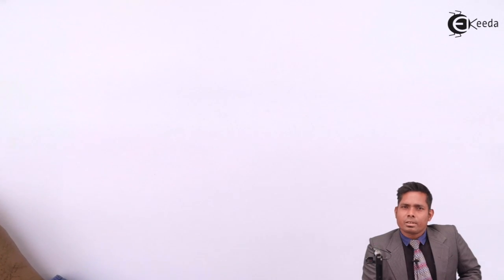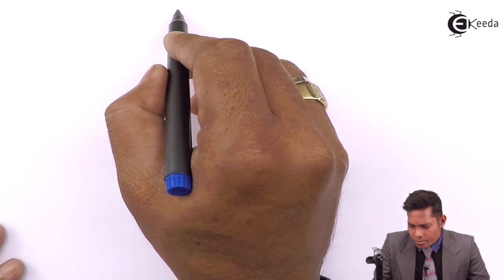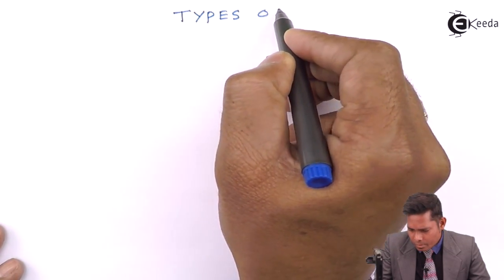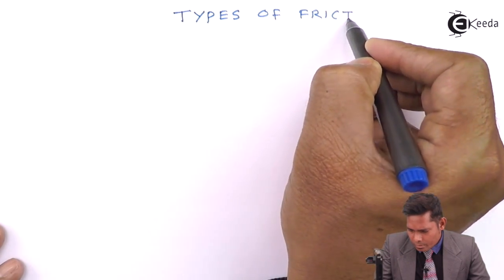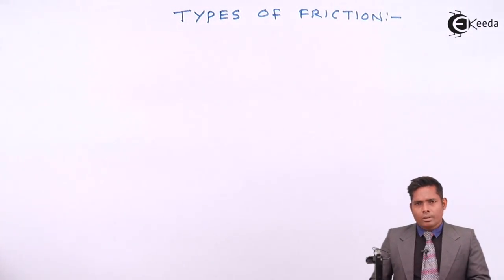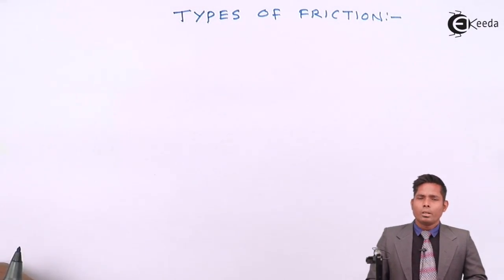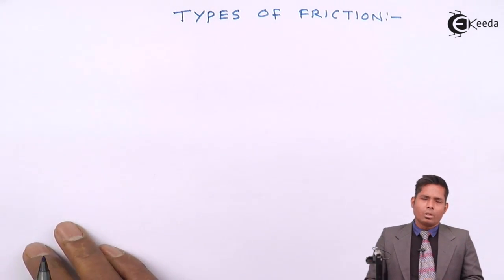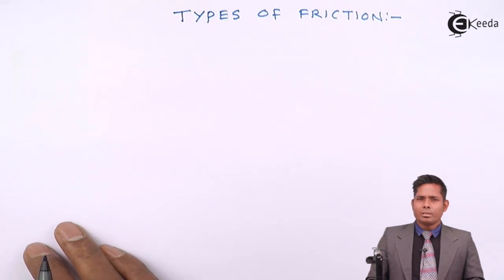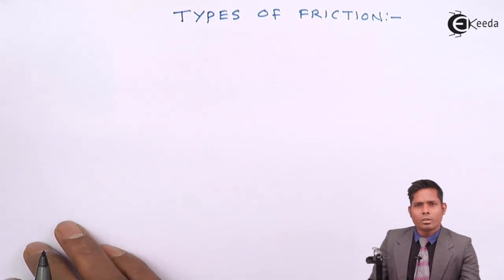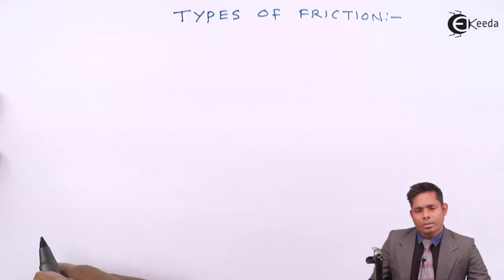In this video we will be discussing about the various types of frictions. We will write down the types of frictions. Basically in your standard, you will be dealing with mostly static friction or kinetic friction. But still, we will know about static friction, kinetic friction, rolling friction, and fluid friction. So there are four types of friction.